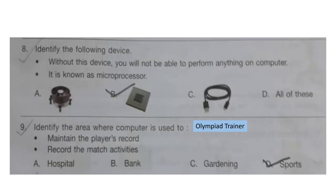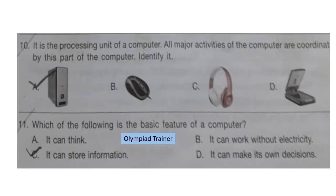Question 8: Identify the following device. Without this device, you will not be able to perform anything on a computer. It is known as the microprocessor. The correct answer is option B. Question 9: Identify the area where a computer is used to maintain the player's record and record match activities. The correct answer is option D — Sports. Question 10: It is the processing unit of a computer. All major activities of the computer are coordinated by this part. Identify it. The correct answer is option A — CPU.